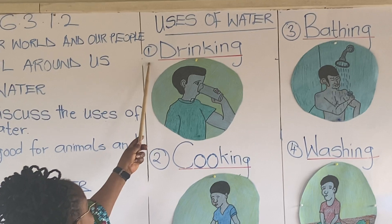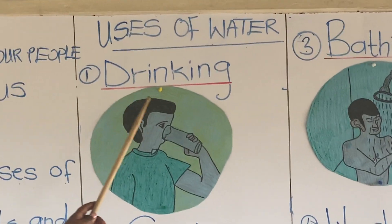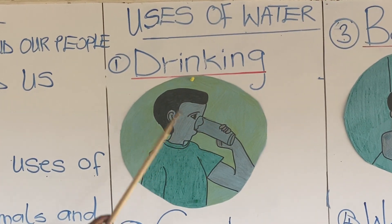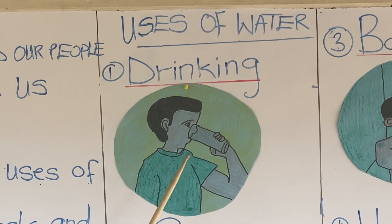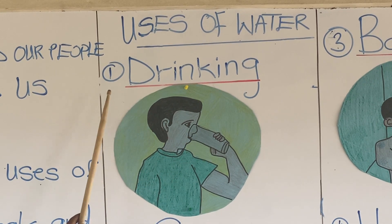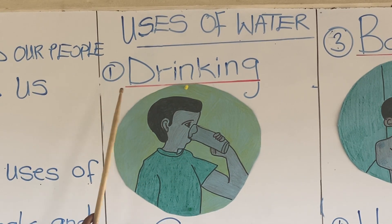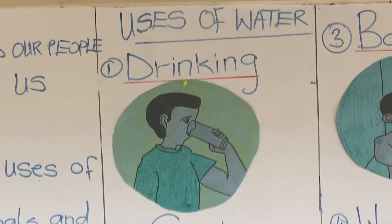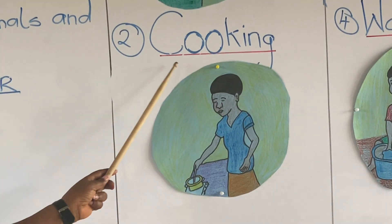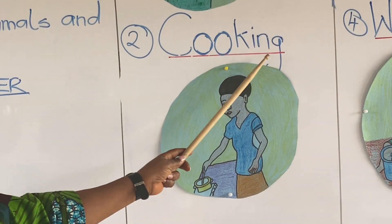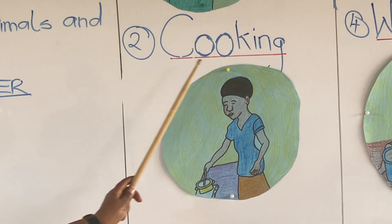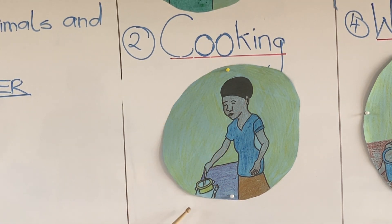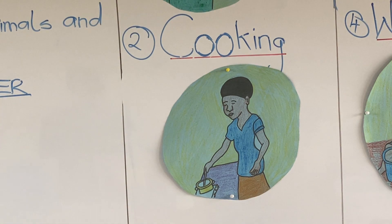1. Water is used for drinking. You see the boy drinking water because water is life. 2. Water is used for cooking food in our homes. You see the lady cooking food — she is using water to cook the food.